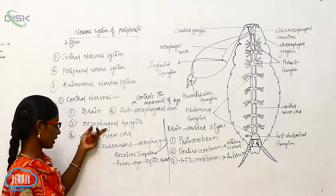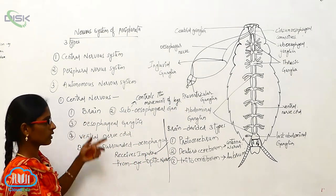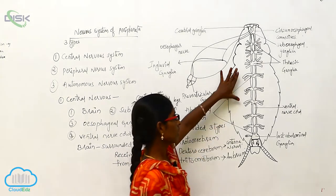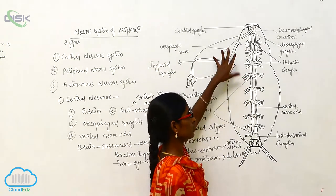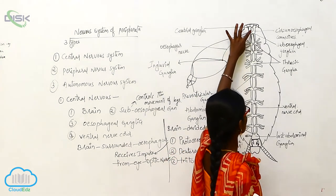The esophagal ganglia and ventral nerve cord are used to maintain the equilibrium of the body. Here the circumesophagal connectives.